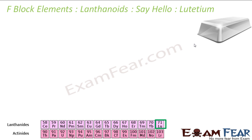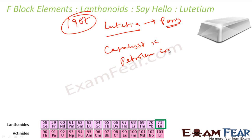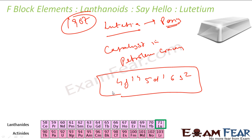Lutetium is a silvery-white metal resistant to corrosion in dry conditions but reacts in moist conditions. Discovered in 1907, its name comes from the Latin word 'Lutetia,' which means Paris. It is used as a catalyst in petroleum cracking. Its electronic configuration is 4f¹⁴ 5d¹ 6s².